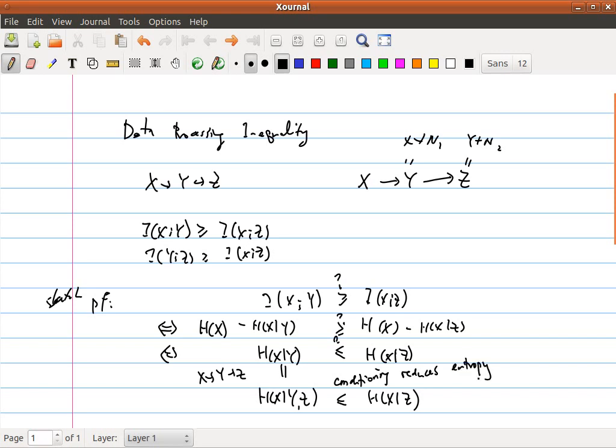Whenever you're given some more information, then you will need less amount of information left, basically. When you have more information, there's less amount of uncertainty in the remaining variable. That's it.